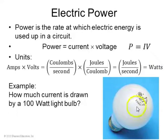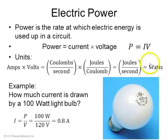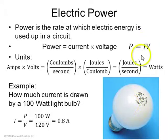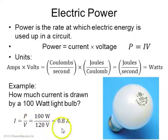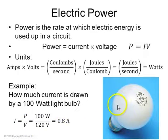For example, if you have a 100-watt light bulb and solve for current with a voltage of 120 volts, the current through the light bulb will be 0.8 amperes.